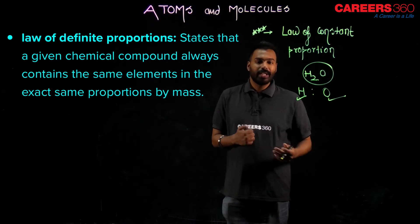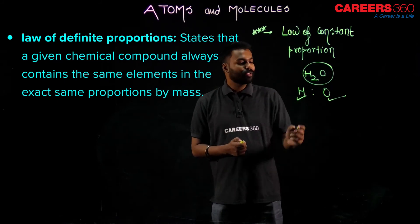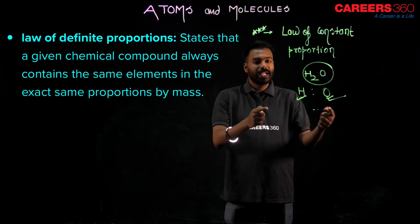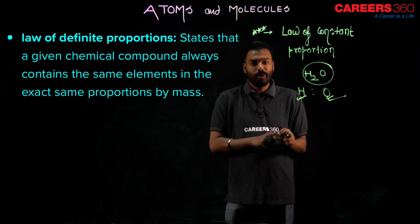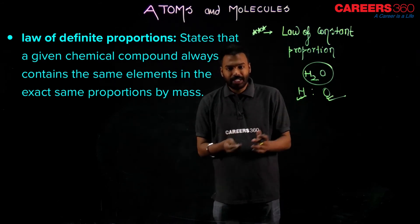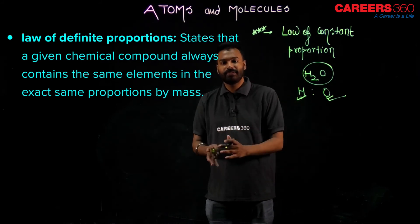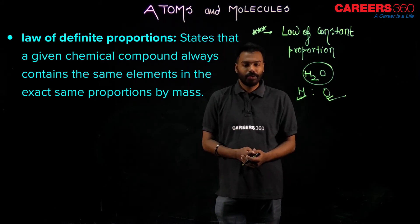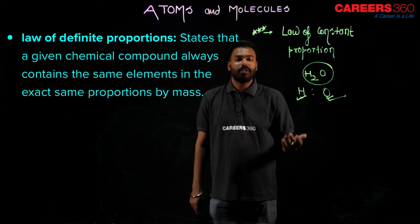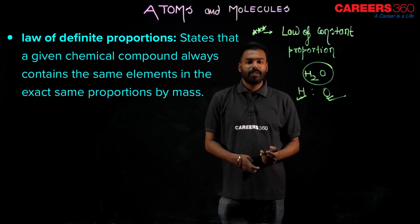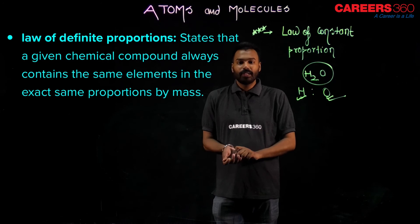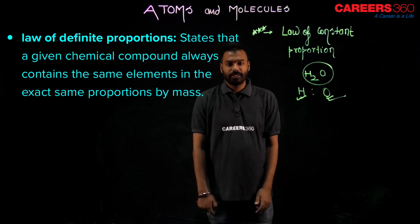Same proportion by mass means that whatever the mass of hydrogen and oxygen combined to form water, that same mass ratio will be found in tap water, river water, and sea water. The mass involved is the same from all sources. This is what the law of definite proportion is.